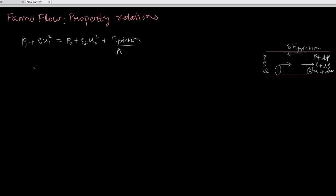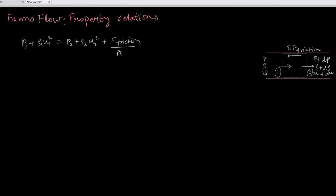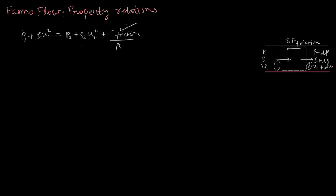Consider the momentum equation: p1 plus rho1*u1² equals p2 plus rho2*u2² plus friction force divided by area. We model the friction effect as a shear stress. Since friction force is directly proportional to the square of velocity, and velocity is changing throughout the duct, friction force f will change. To evaluate the friction force throughout the duct, we take a small differential volume of length dx and cross-sectional area A, which is constant throughout the duct, and model the frictional effect as the shear stress at the wall acting on the fluid.